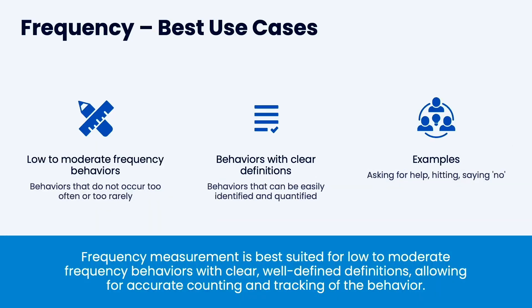You want to use frequency when you have low to moderate frequency behaviors. If it's too high, it gets difficult; if it's very rare, it also gets difficult. These are typically shorter behaviors like raising your hand. Examples are asking for help, hitting, saying no — anything short that happens at a low to moderate frequency is best for a frequency count.